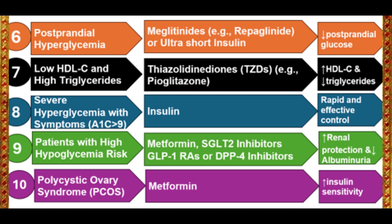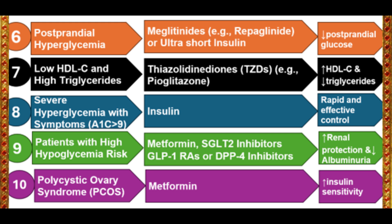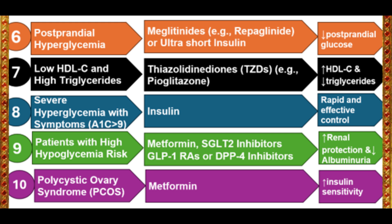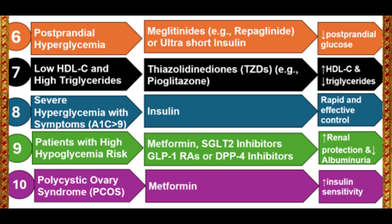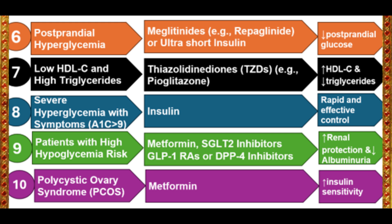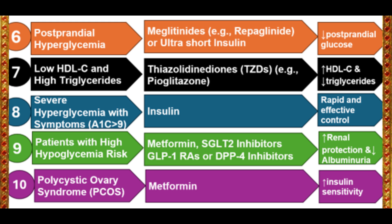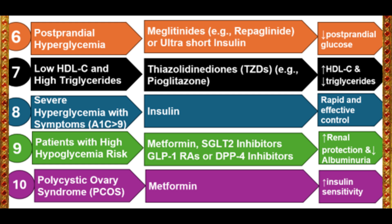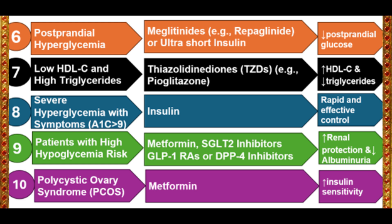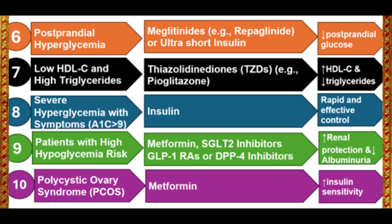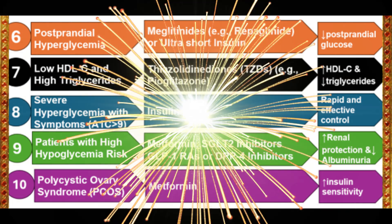Case 7 – Low HDL-C and High Triglycerides. In patients with low HDL-C and high triglycerides, thiazolidinediones like pioglitazone are preferred. They improve HDL levels, reduce triglycerides, and alter LDL to less atherogenic particles.